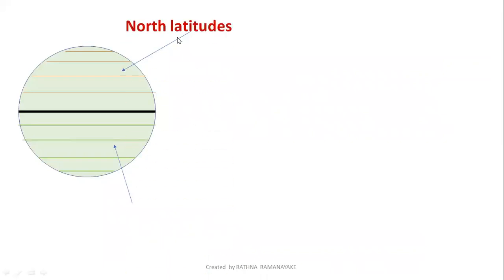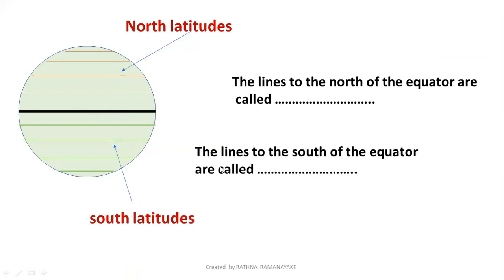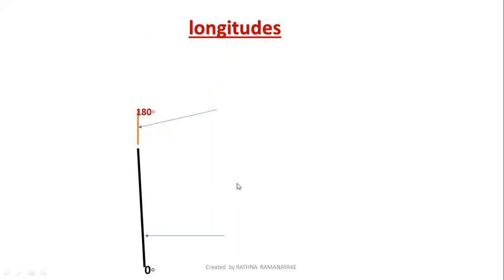The latitudes above the equator are called north latitudes. The lines to the south of the equator are called south latitudes. There are 90 north latitudes and 90 south latitudes, making a total of 180 latitudes.